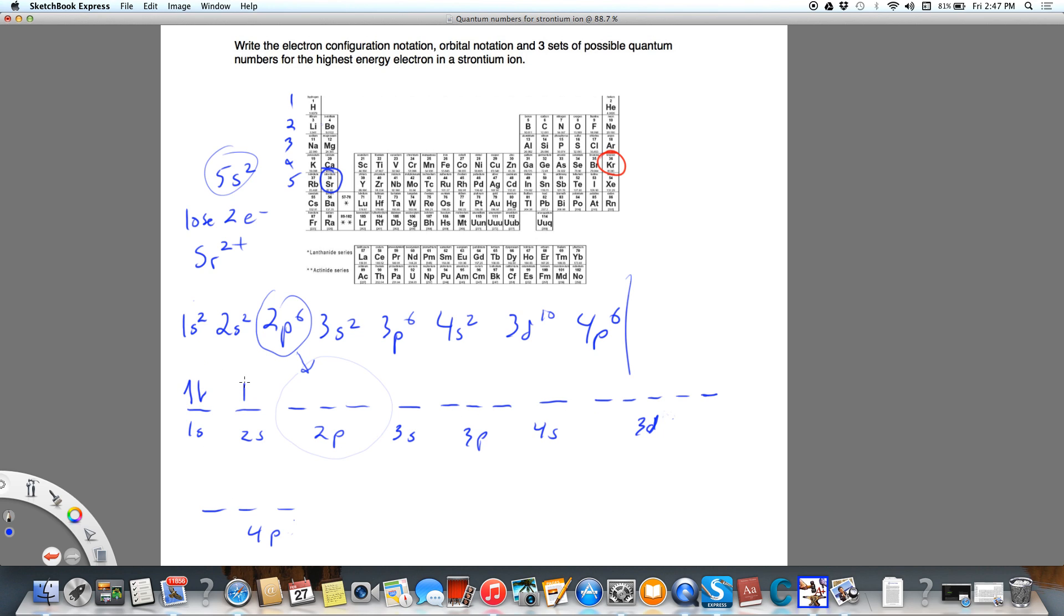So that's going to be 3d and 4p, and then we simply put an up arrow and a down arrow. Watch how I fill this, watch the order. So we half fill them, then we go back and fill them, half fill, go back and fill, follow the pattern. For 3d, we're going to half fill all these orbitals, then we're going to go back and complete them, and then lastly, there's our orbital notation for krypton.